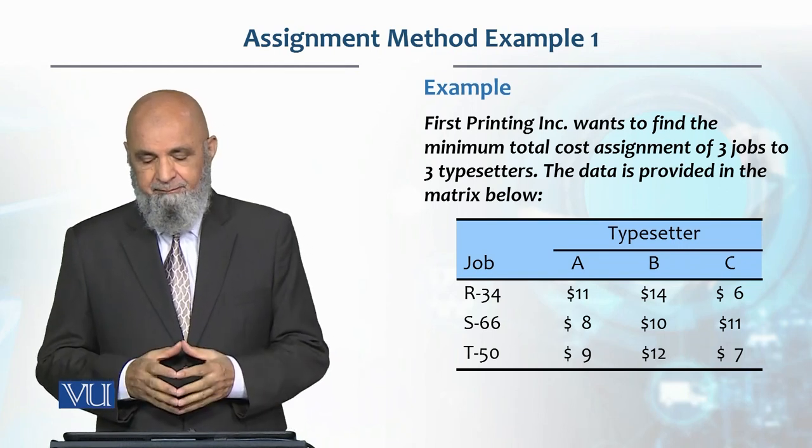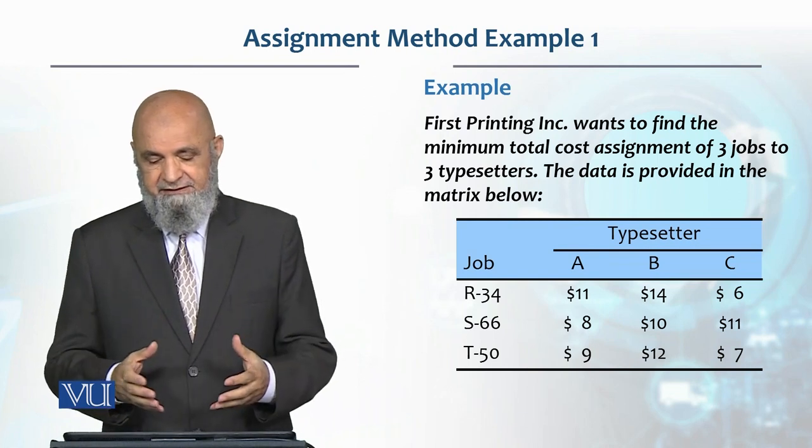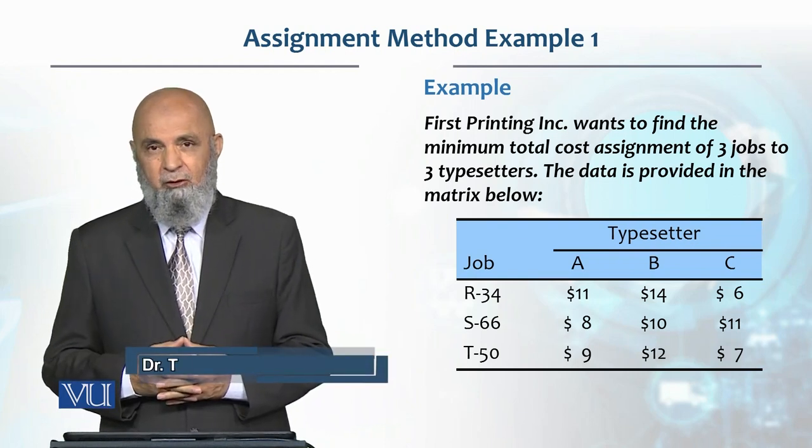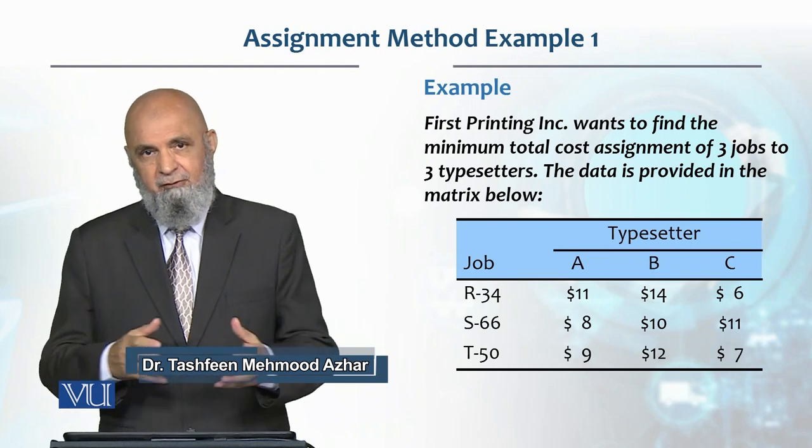This data given is three jobs, T34, S66, T50, and resources are A, B, C, and their relative costs. We have data provided costs.